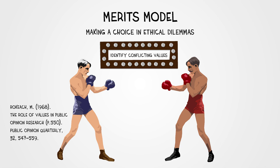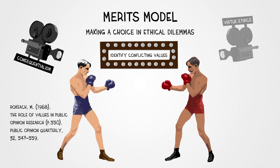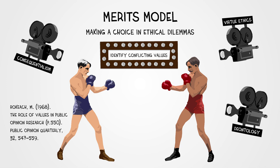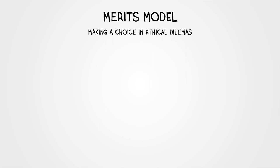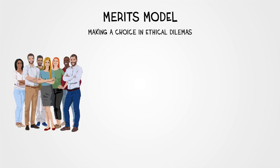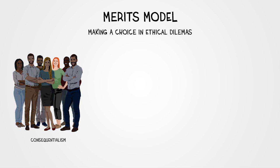Then consider how each of the ethical perspectives — consequentialism, virtue ethics, or deontology — would guide your ethical decision-making. For instance, you need to identify all potential stakeholders and think about how they would be affected by your decision. Will you cause any harm, and how can you minimize such harm? Who gains the most from your decision, and who loses? This means applying a consequentialist perspective to your choice.